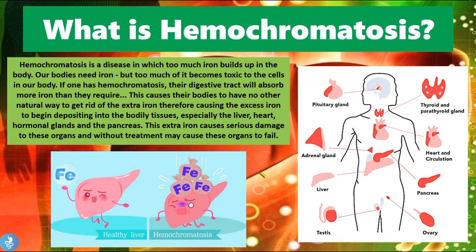The most commonly affected organs are the liver, the heart, the hormonal glands — which include the pituitary gland, the thyroid and parathyroid glands, the ovaries, the testes, and the adrenal glands — and finally the pancreas. We can see a picture of what iron overload looks like in the liver: a healthy liver able to metabolize iron normally compared to a liver affected by hemochromatosis, where the iron becomes too much for the liver to handle.